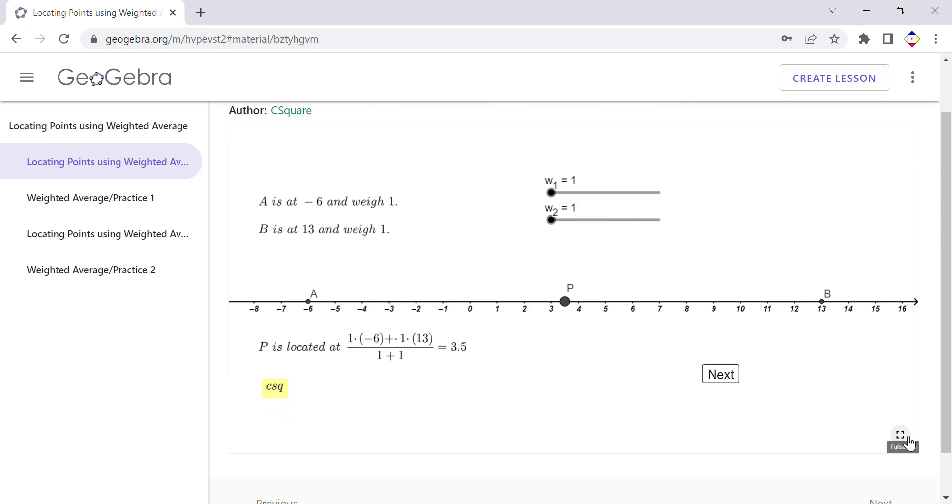If you want to maximize the screen, you can click on this and play with that. It's a better viewing in my opinion. I'm going to keep it this way. What you want to do here is keep one of these values as 1 and change the other one.